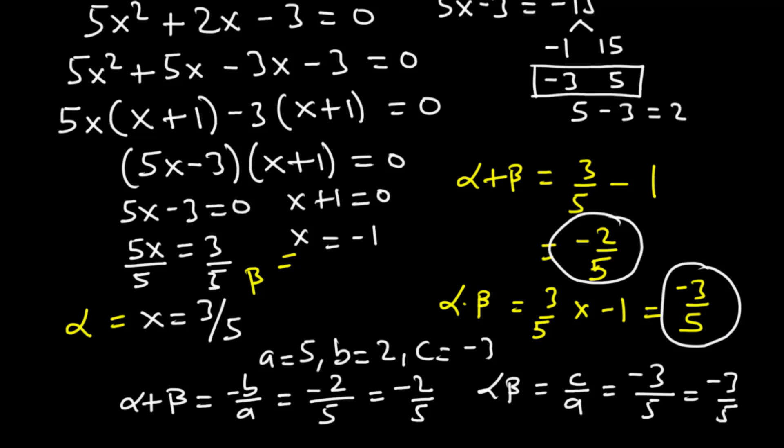So, given a quadratic equation with coefficients a, b, and c, we can find the sum of roots and the product of roots using a very simple method like what we have studied today.